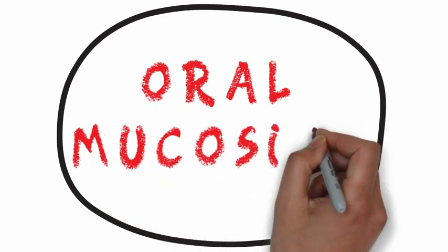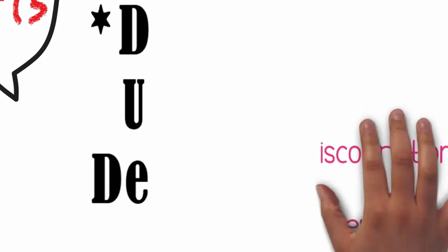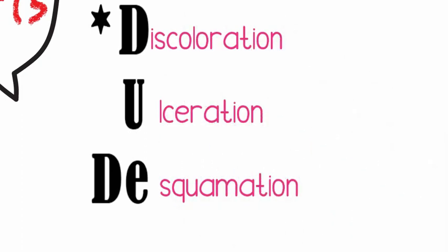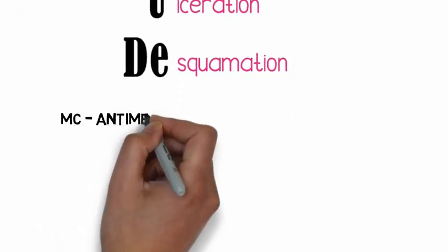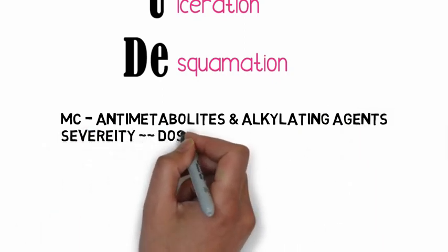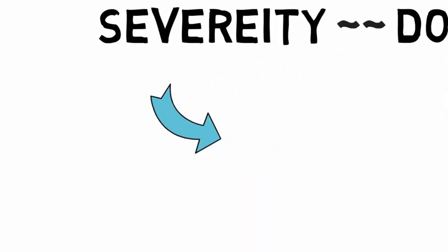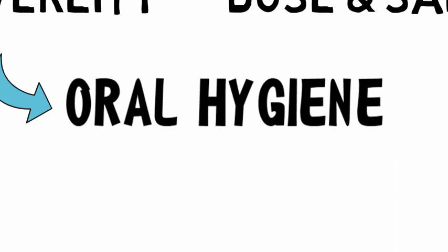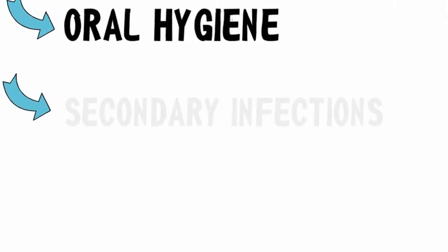Coming to the first oral complication — oral mucositis. Remember the mnemonic DUD, which stands for Discoloration, Ulceration, and Desquamation. Oral mucositis is associated with anti-metabolites and alkylating agents. The severity may be dose related and associated with the salivary concentration of the drug. In severe cases, patients find it difficult to maintain proper oral hygiene, leading to accumulation of debris, microbes, and ultimately secondary infections.